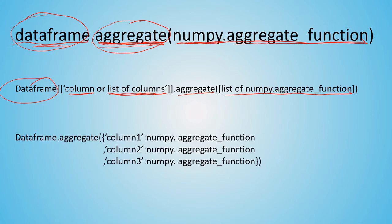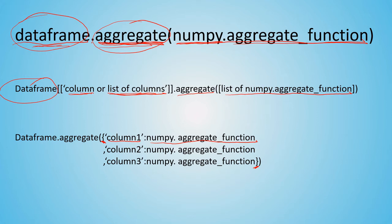The third method uses a dictionary — indicated by curly brackets — where for each variable we specify a separate aggregation function. For example, column one can use min, column two can use max, and column three can use average. That's enough theory; let's jump to the Python IDE and try this practically.